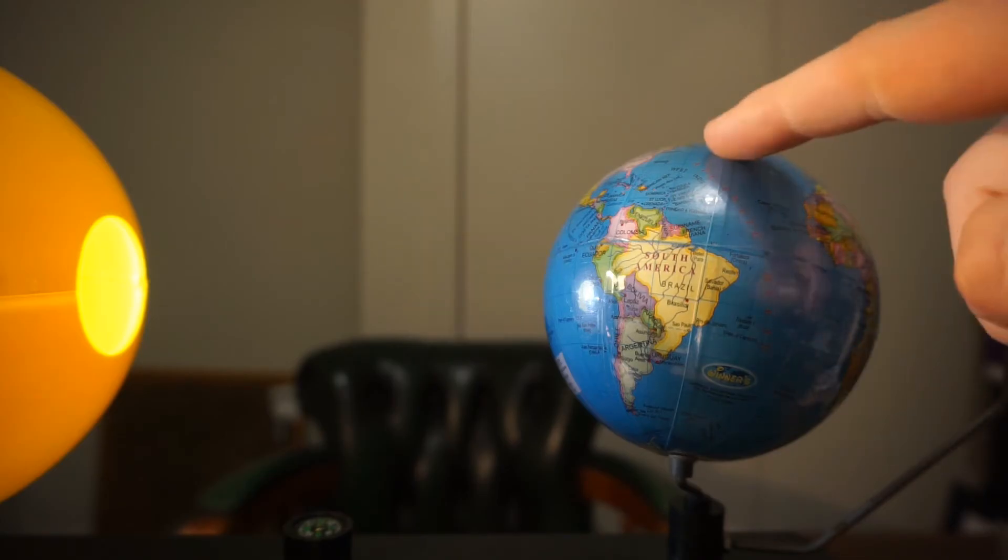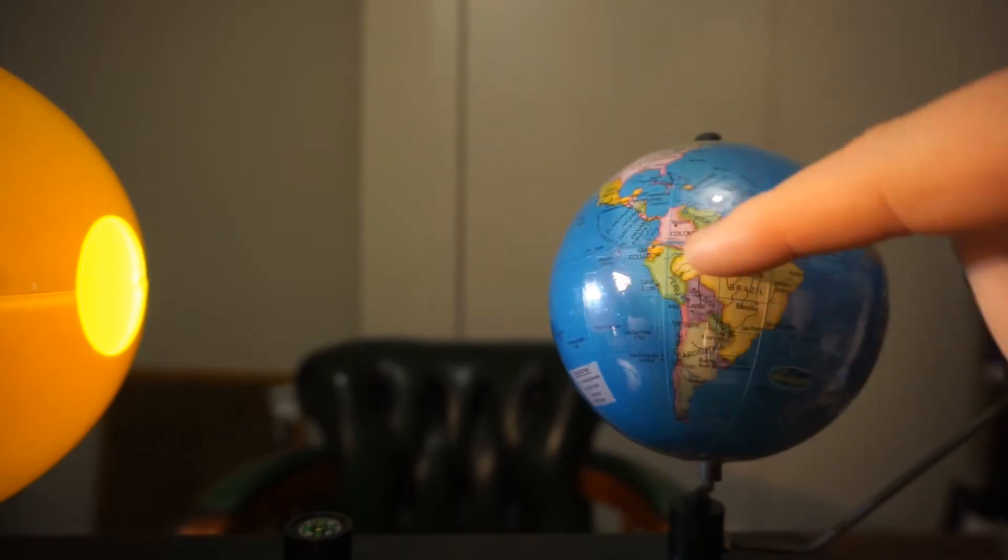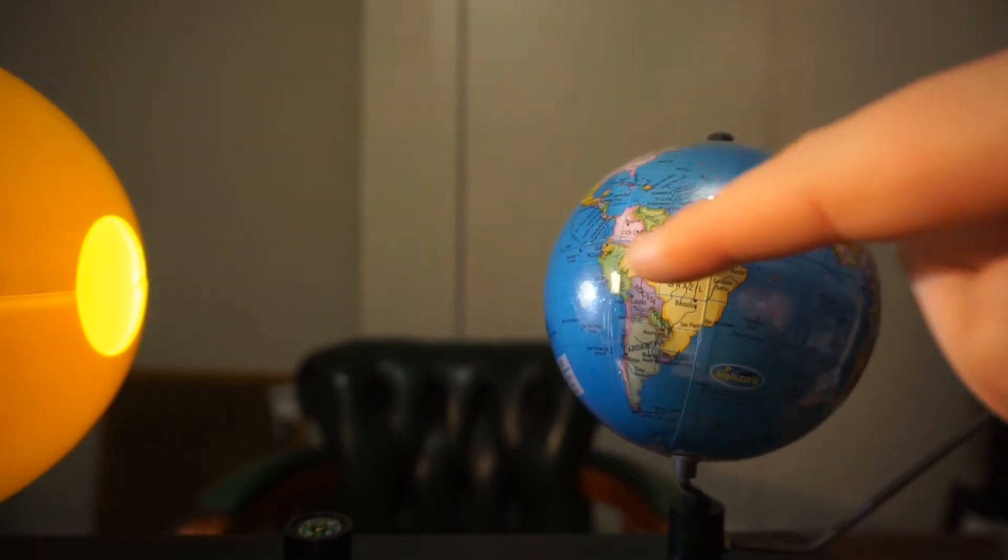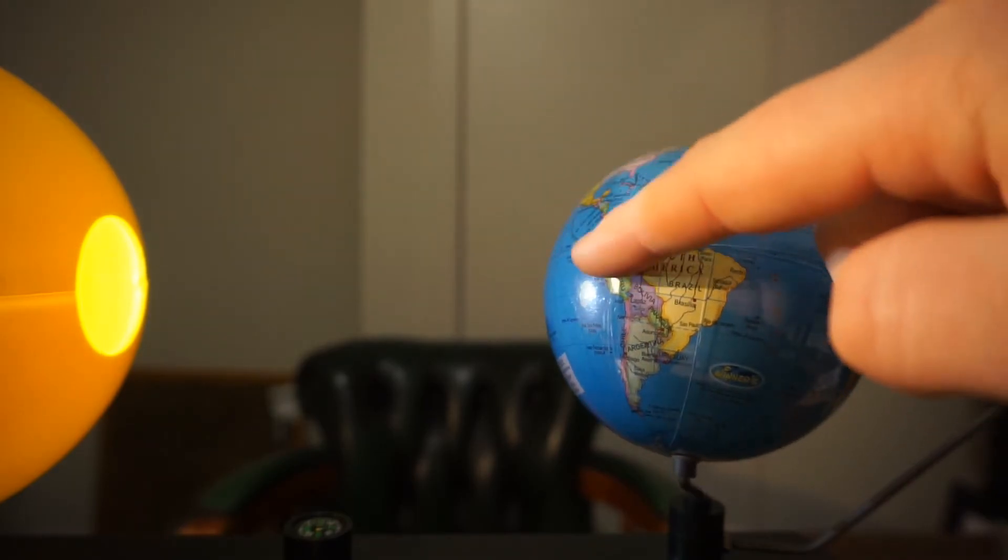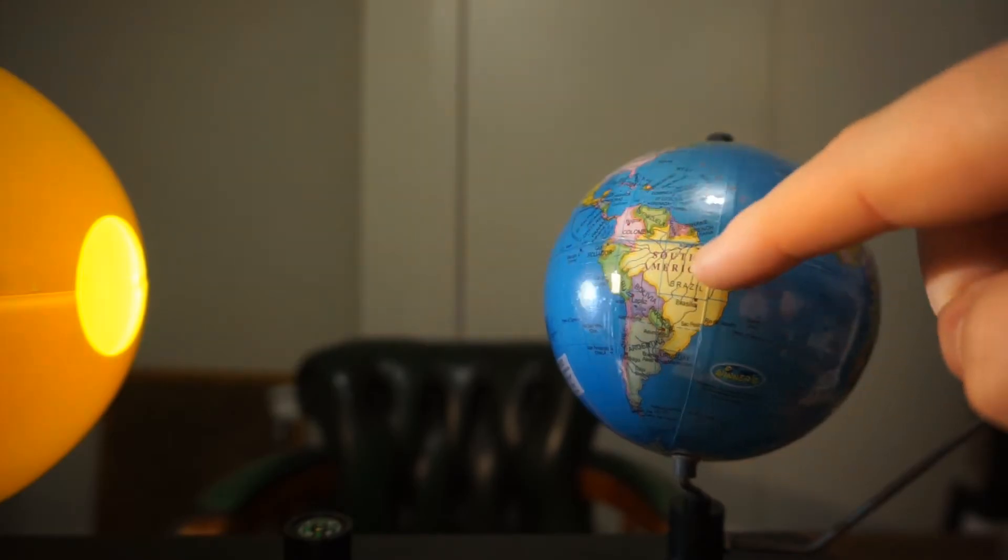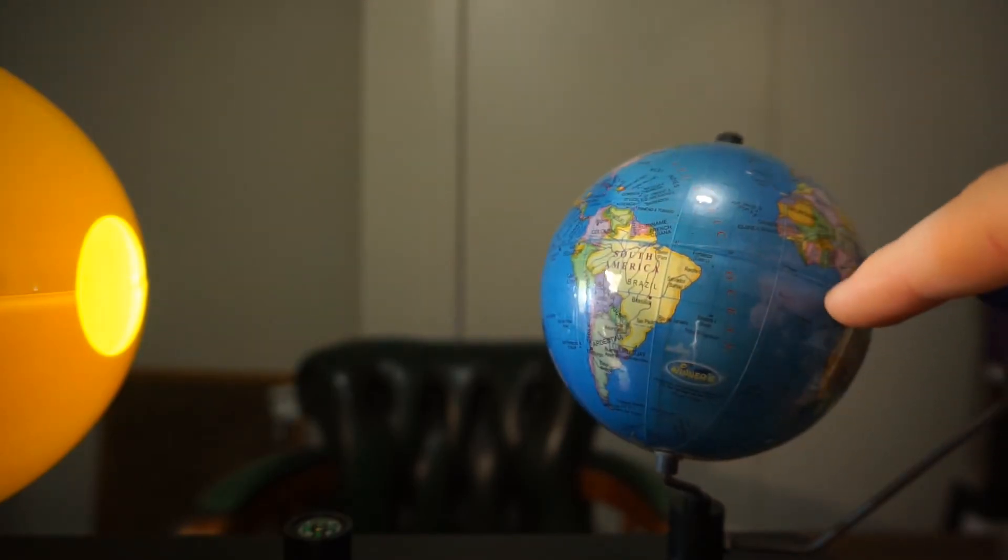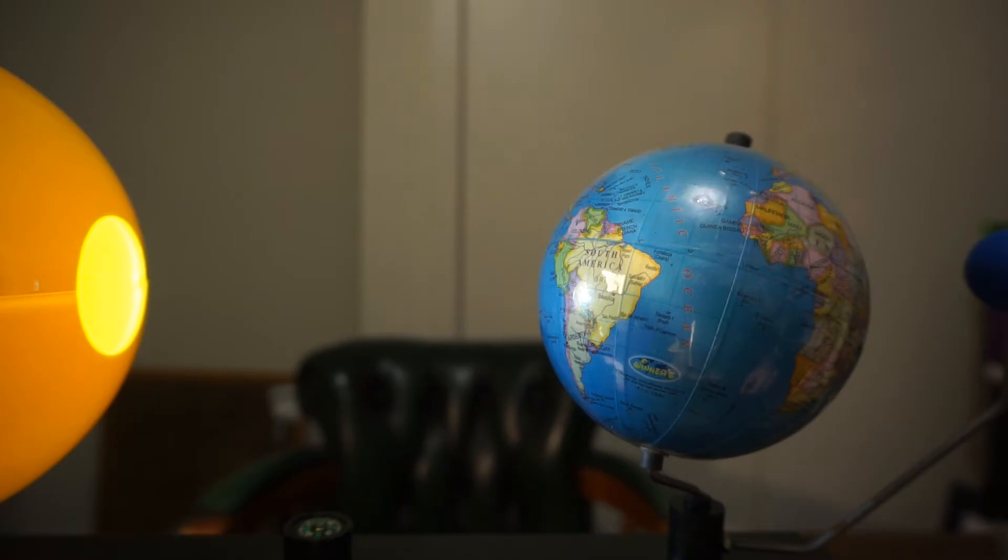The halfway point between the Northern and the Southern Hemispheres is called the equator, and this receives the most direct sunlight from the Sun. And the countries that lie on the equator, or near the equator, receive the most direct sunlight, and are therefore some of the hottest countries in the world.